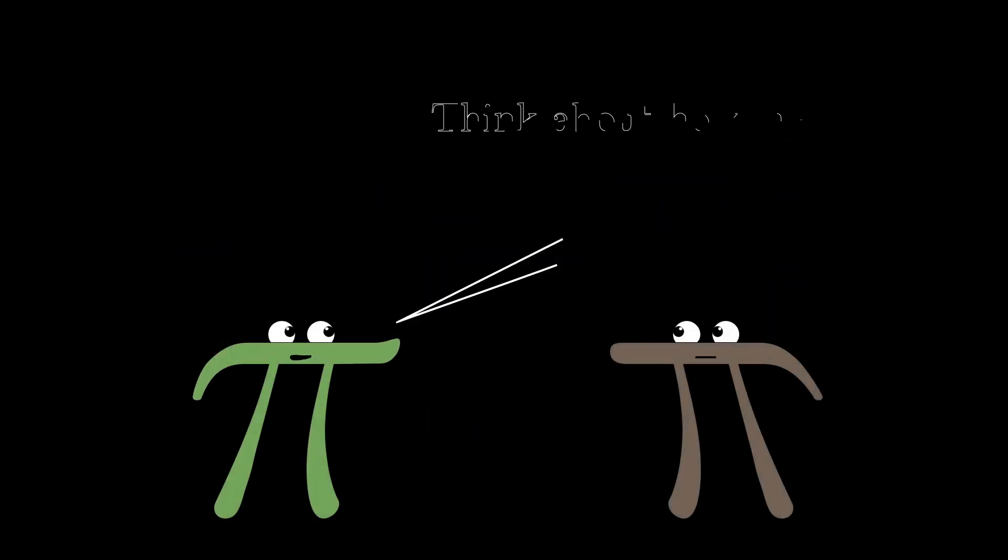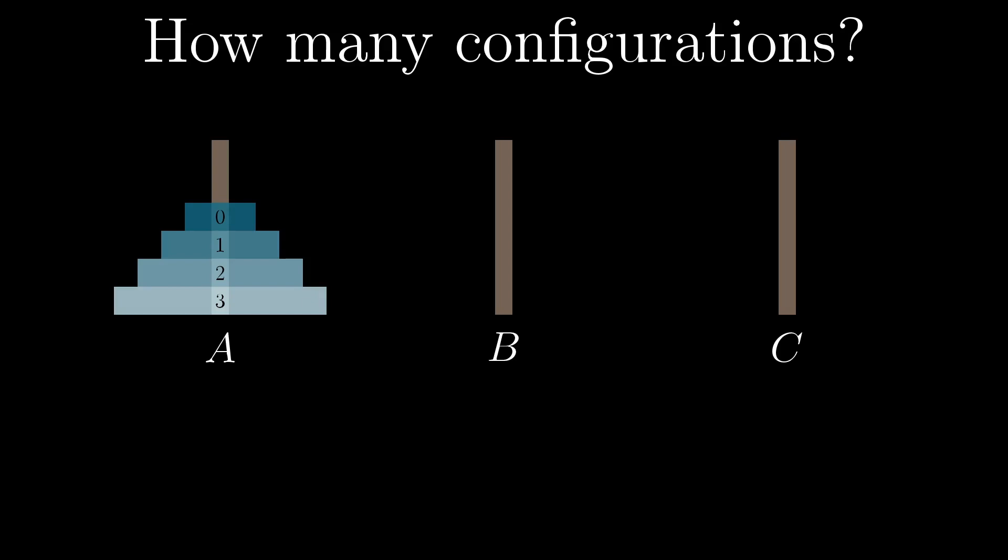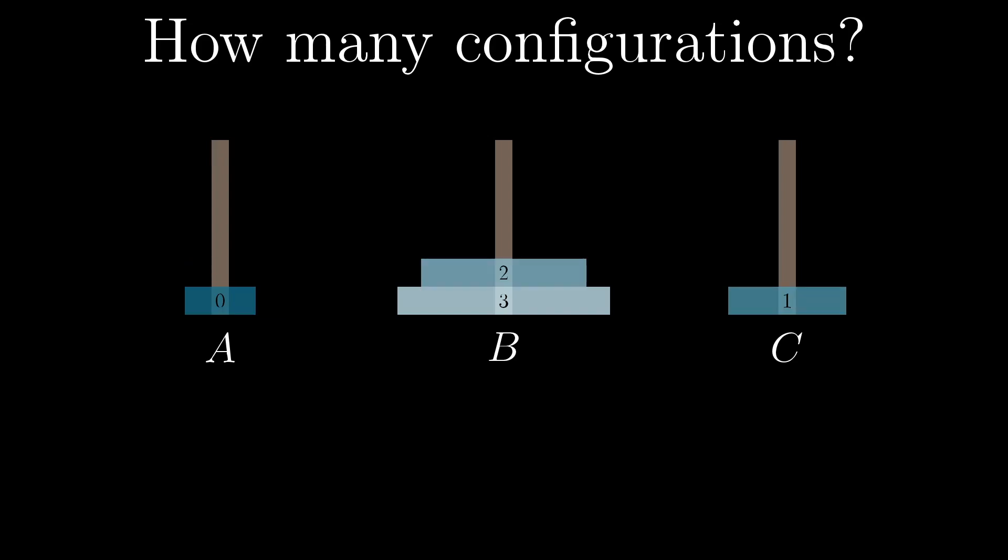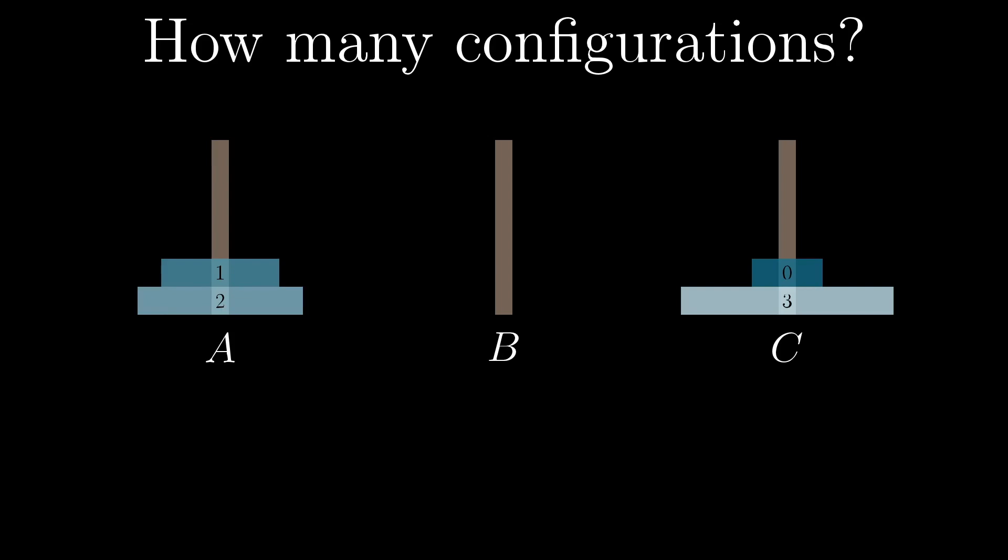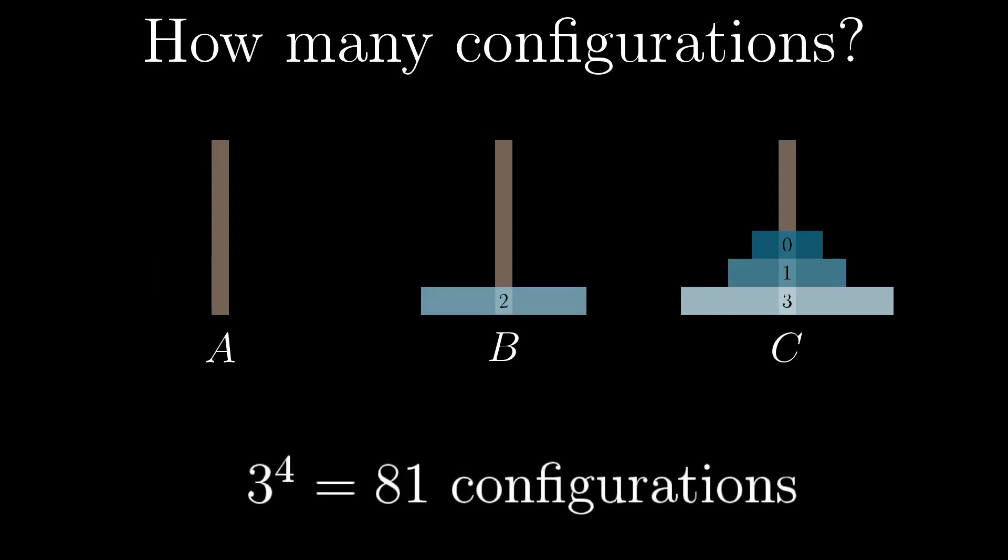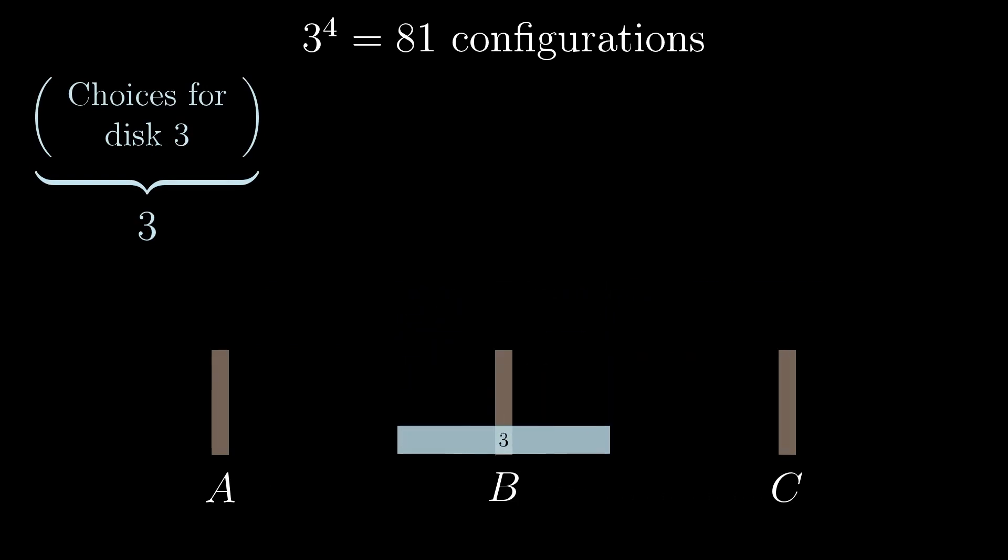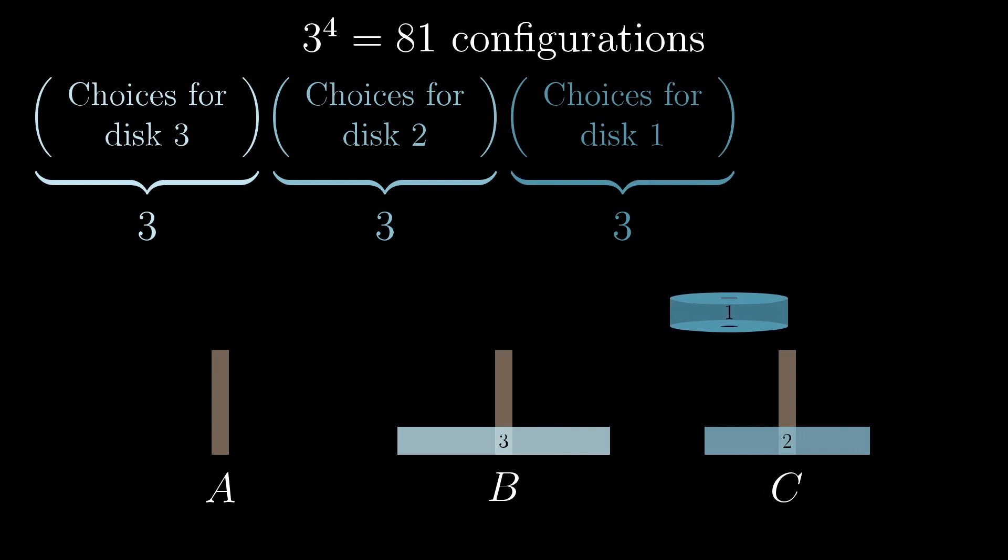You can ask how many different configurations are there for towers of Hanoi. Let's take a moment and think about this. How many total configurations of disks on pegs are possible where the disks on a given peg have to be in descending order of size? The answer is three to the fourth, 81 possible states that your puzzle can be in. To see this, notice that there are three choices for where to put that biggest disk. Then, three choices for where to put the next biggest disk. And for each successive disk, you have three choices for where to place it.